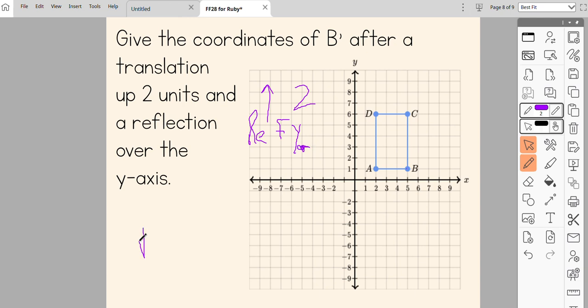So that means B prime, which is my new location for B, is negative 5, 3.